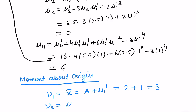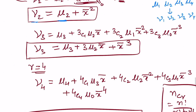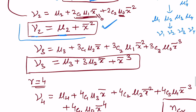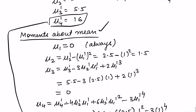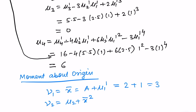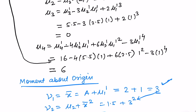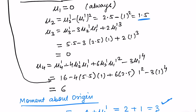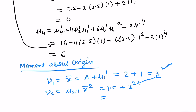For mu 2 prime, the formula is mu 2 plus x-bar squared. Substituting mu 2 equals 1.5 and x-bar equals 3: mu 2 prime equals 1.5 plus 3 squared, which gives us 10.5.